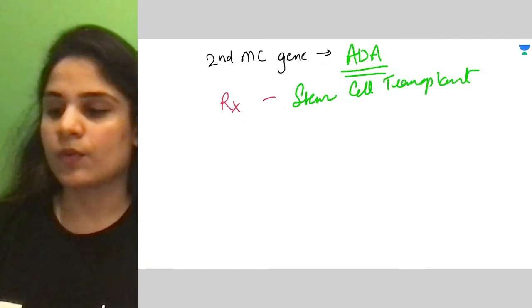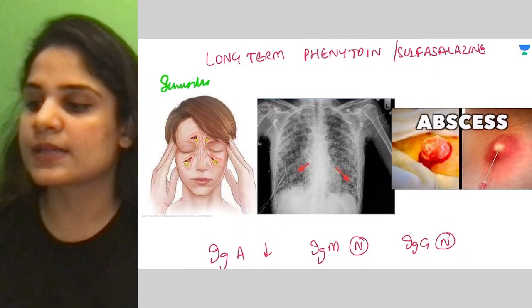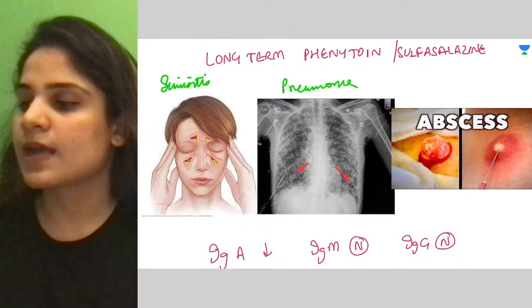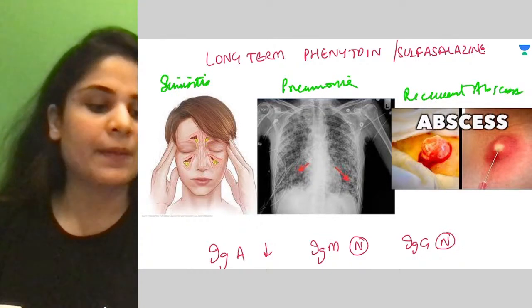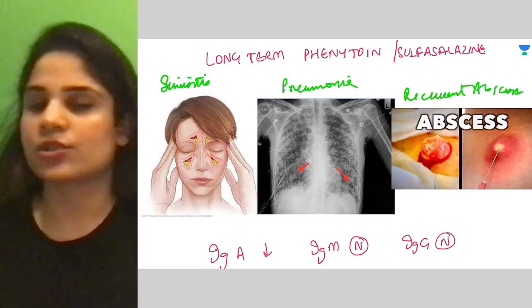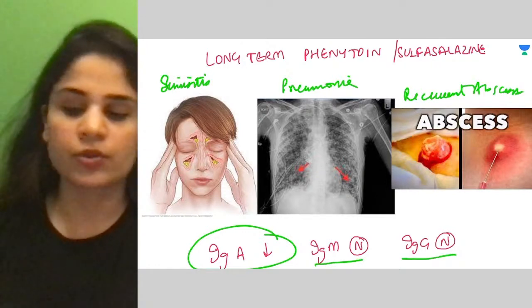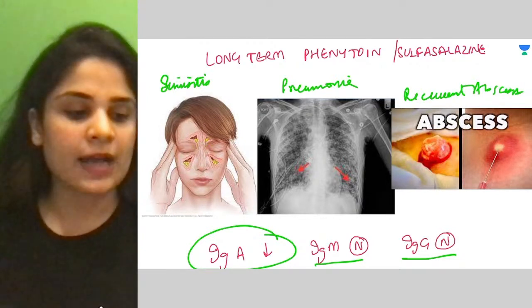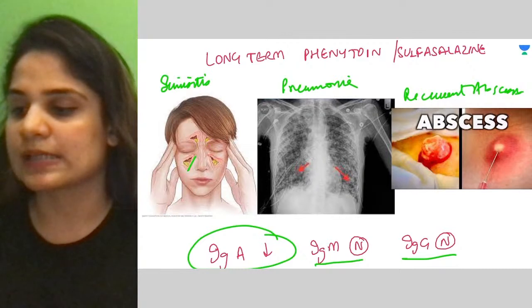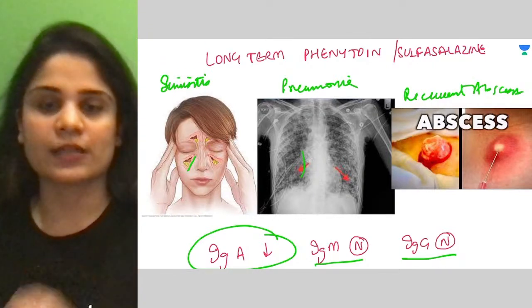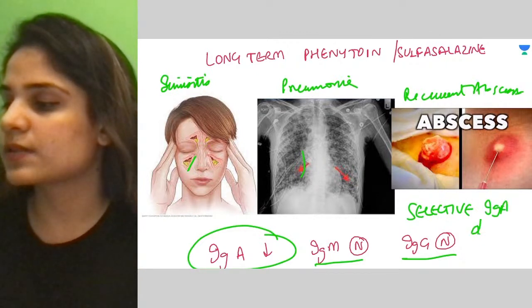Moving to the next condition: a patient comes with similar symptoms — sinusitis, recurrent pneumonia, and recurrent skin abscesses. On lab examination, IgA levels are low but IgM and IgG levels are normal. Because IgA is solitarily low and respiratory and gastrointestinal linings are affected — sinusitis, pneumonias — this is Selective IgA Deficiency.